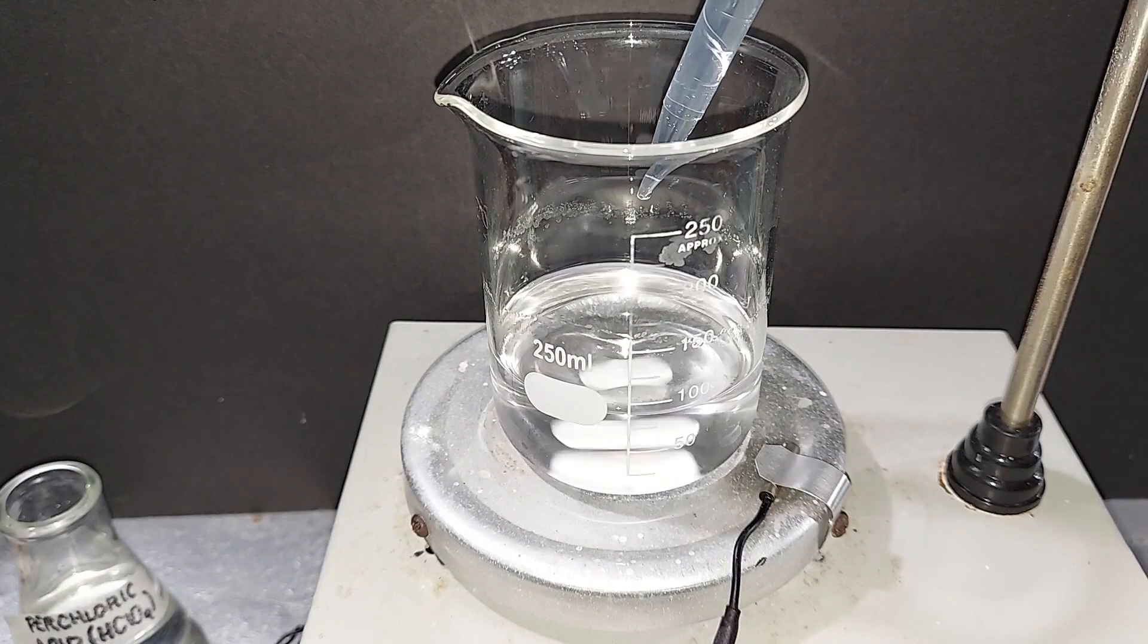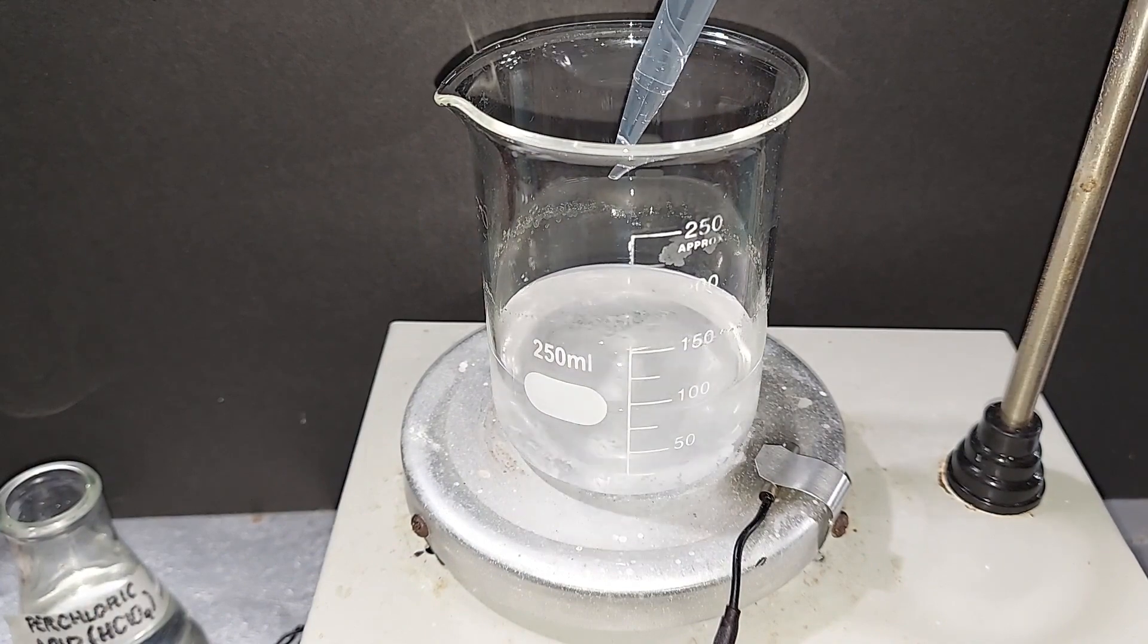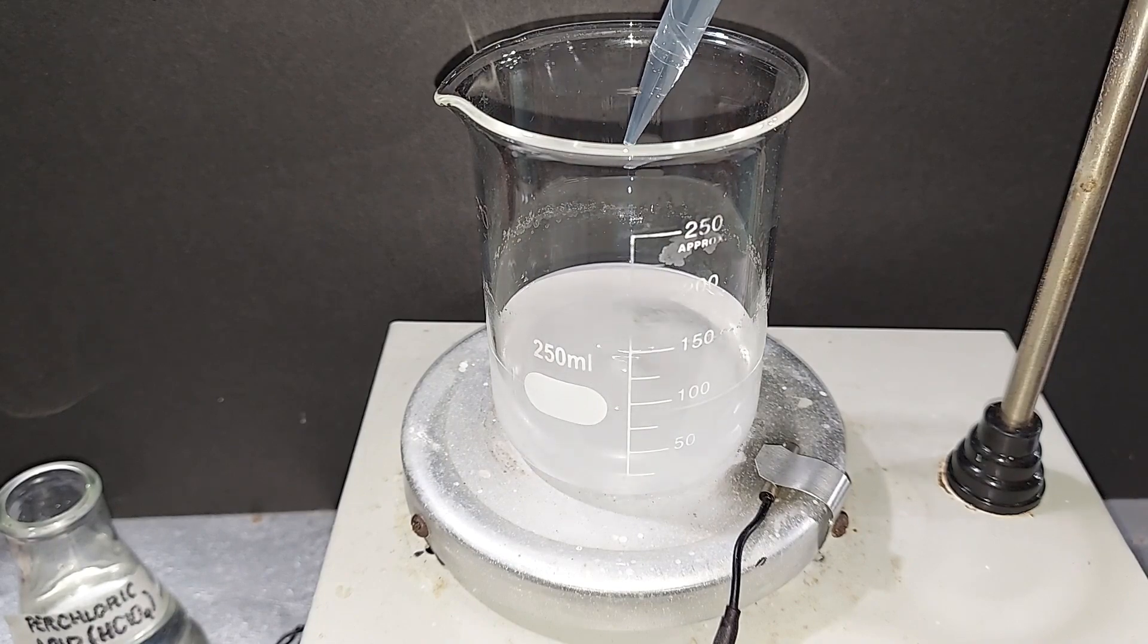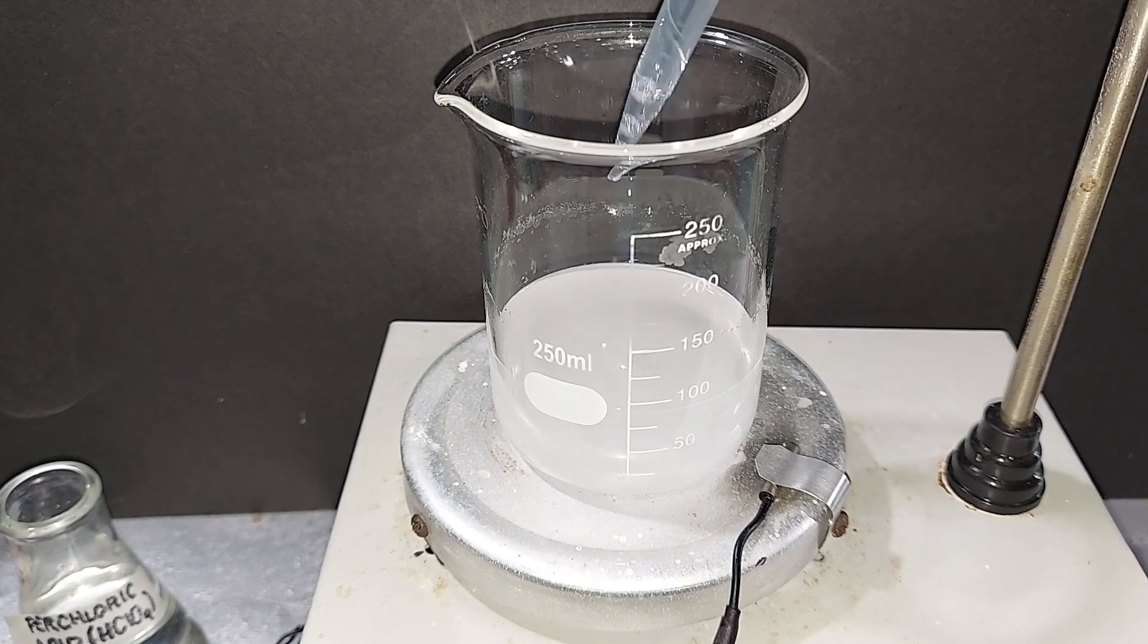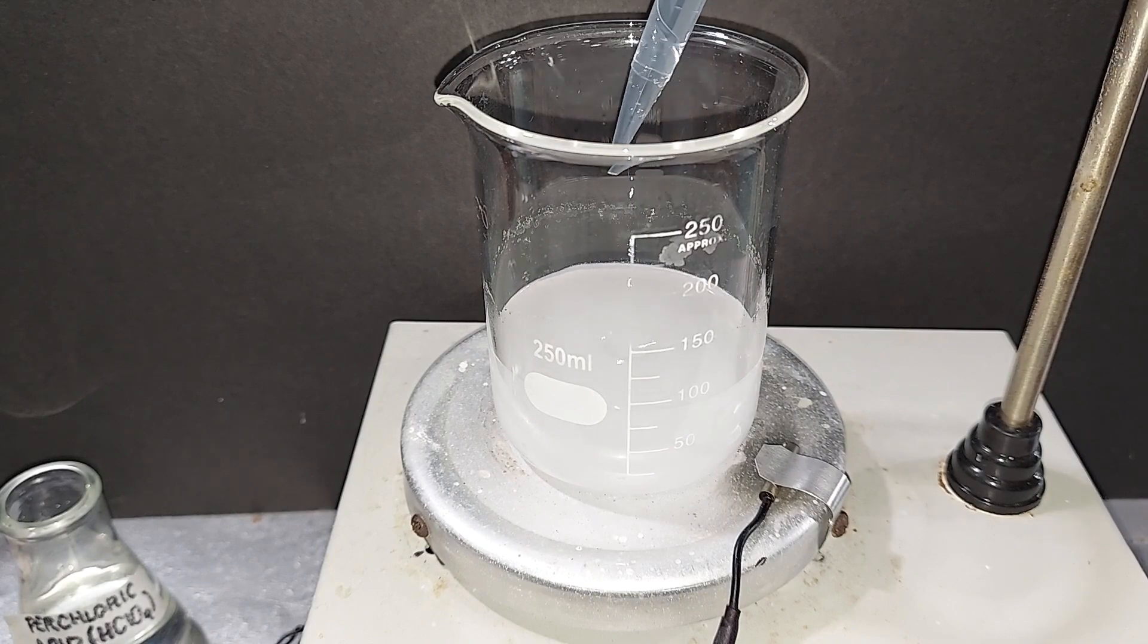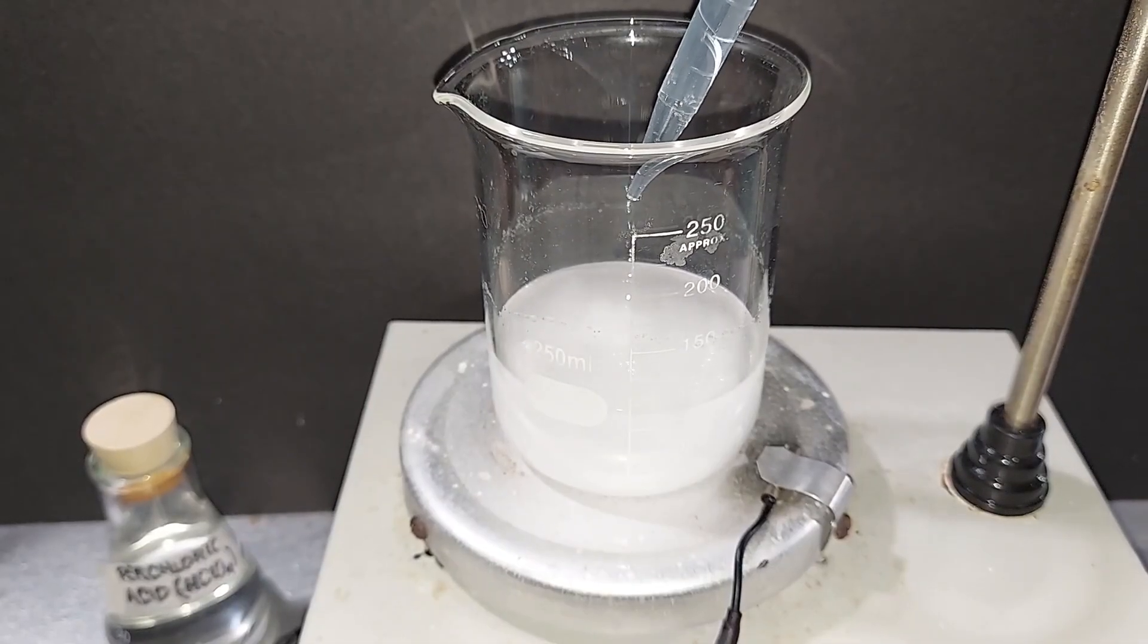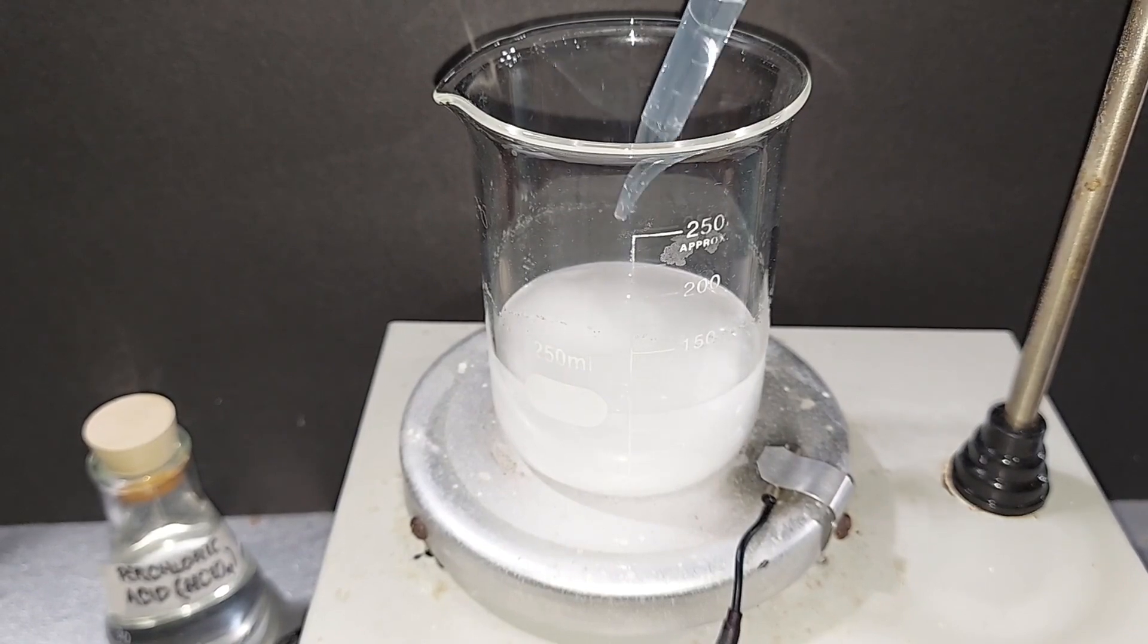Adding the perchloric acid. You immediately see the HDP come out of solution there. I'm going to continue to add this slowly. I'll be back. I'm almost done here but the HDP is so thick in there that the magnetic stir is barely doing anything.